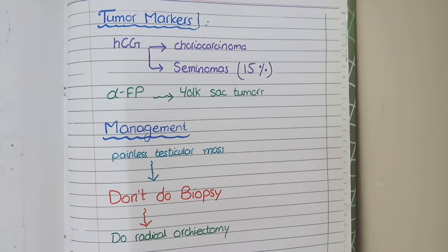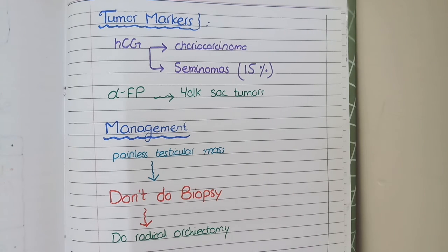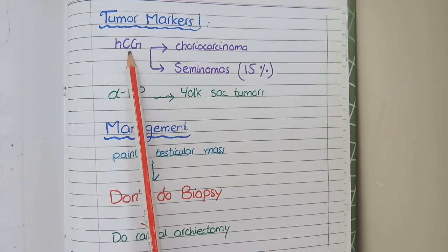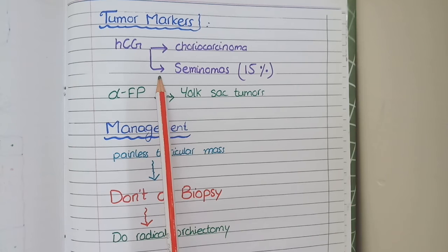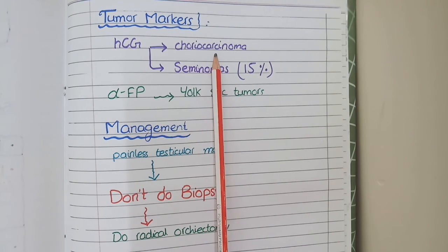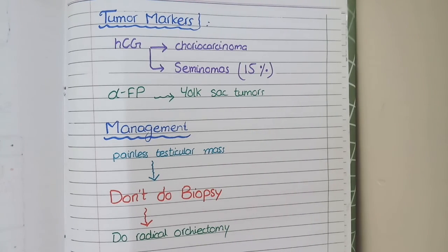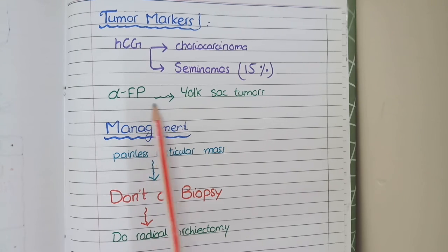Tumor markers have a specific diagnostic role in testicular tumors. Human chorionic gonadotrophin (HCG) is present as a tumor marker in choriocarcinoma and in 15% of testicular seminoma cases, because syncytiotrophoblasts — which secrete HCG — are present in almost all cases of choriocarcinoma but only 15% of seminomas. Alpha-fetoprotein is a tumor marker for yolk sac tumors.